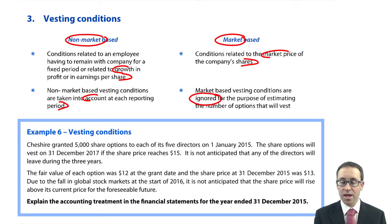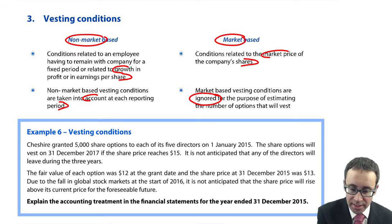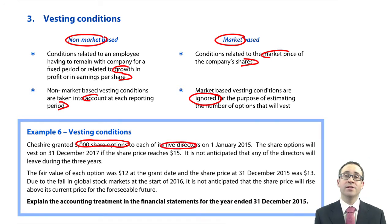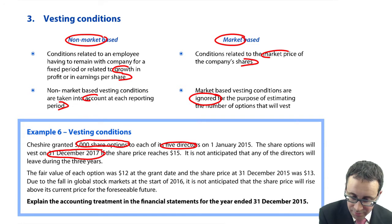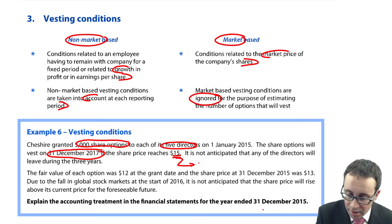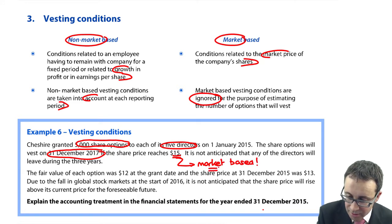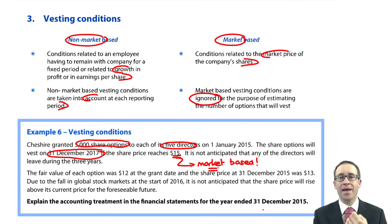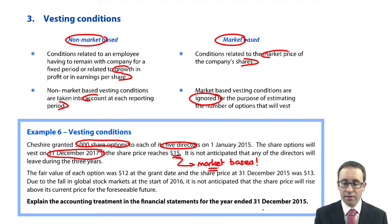The example asks us to explain the accounting treatment for the year ended December 2015. There are 5,000 share options granted to five directors on the 1st of January 2015 — the start of the financial year. The share options will vest on the 31st of December 2017, so that's a three-year period, if the share price reaches $15. That is a market-based vesting condition — the options will only vest and can be exercised if the share price reaches $15. The fair value of the option was $12 at the grant date, which is what we use to record the value.